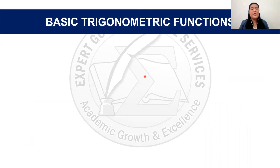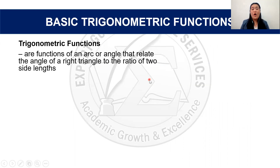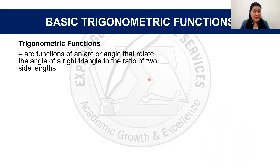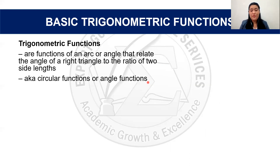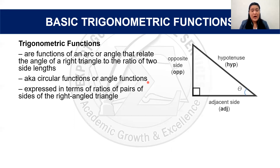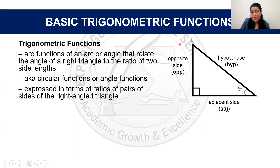So what are trigonometric functions? Trigonometric functions are those functions of an arc or angle that relate the angle of a right triangle to the ratio of the two side lengths. This is why they're also known as circular functions or angle functions. In the simplest way, trigonometric functions could be expressed in terms of the ratios — or fractions — of pairs of sides of the right angle triangle.